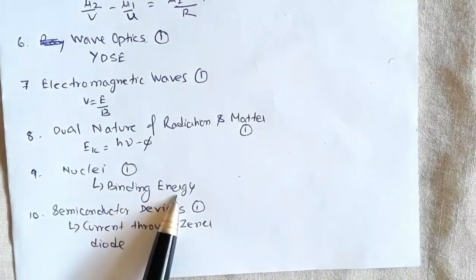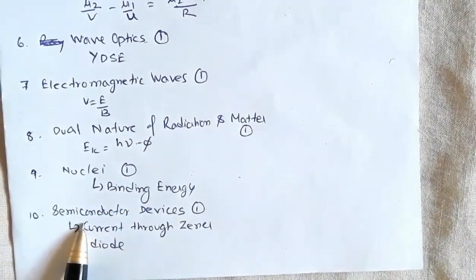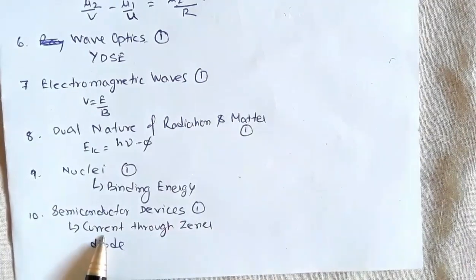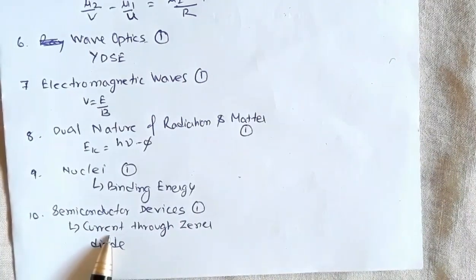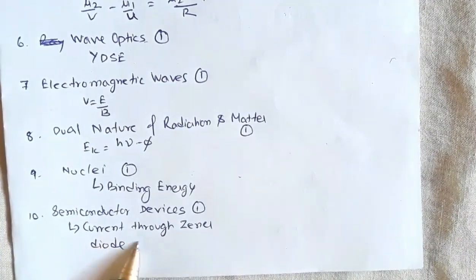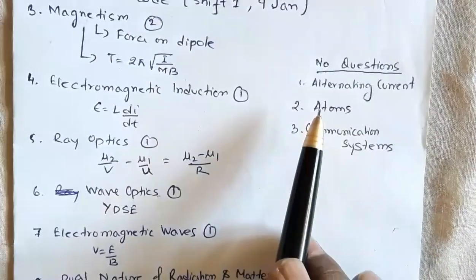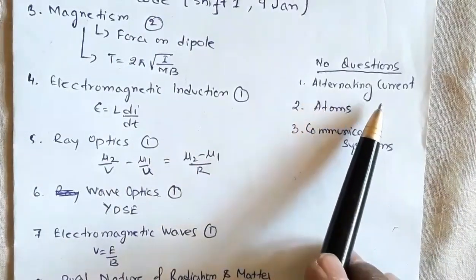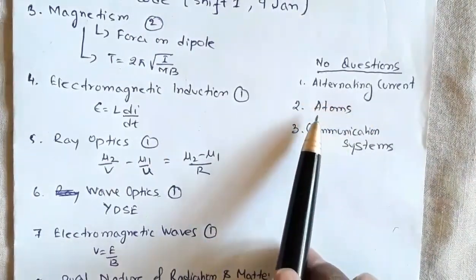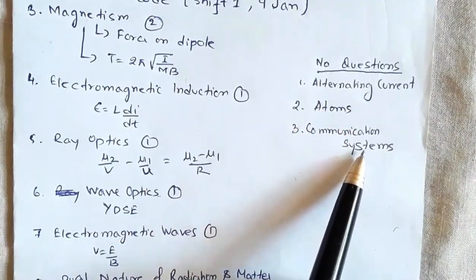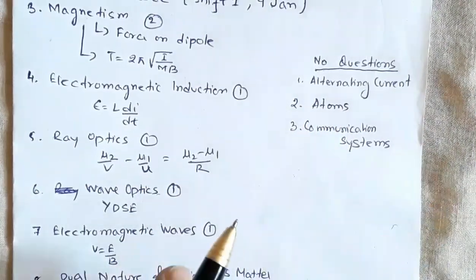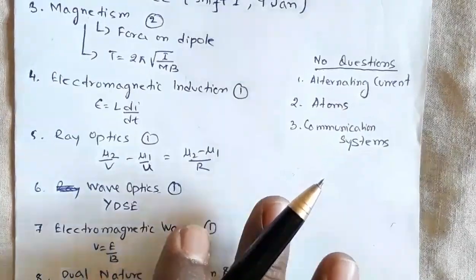For calculation of binding energy, from semiconductor devices one question was asked based on calculation of current through a zener diode. In class 12, no questions were asked from these topics: alternating current, atoms, and communication systems.